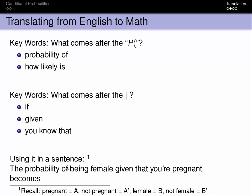So for example, the probability of being female given that you're pregnant becomes a probability of B, because you're female, right? Note down here, given A, where A represents pregnant.